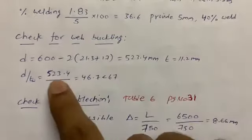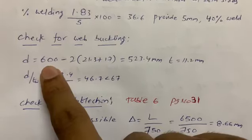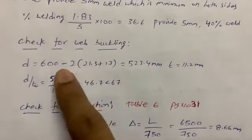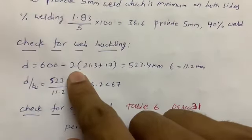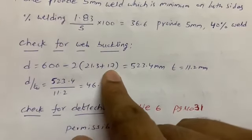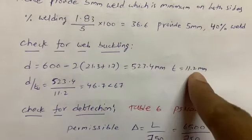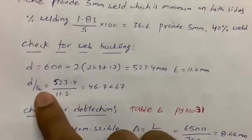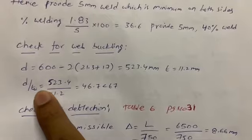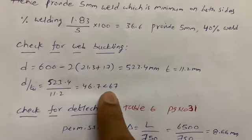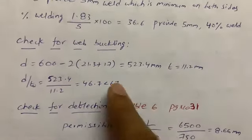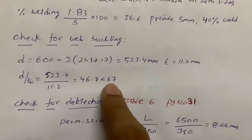For the web buckling check: clear web depth d = 600 − 2(21.3) − 17 mm (deducting flanges and root fillets), and web thickness tw = 11.2 mm. The code condition is d/tw < 67; calculated value = 46.7, which is less than 67 — web buckling check satisfied.